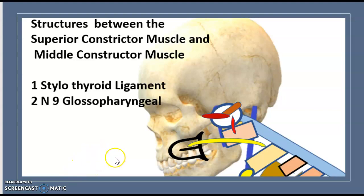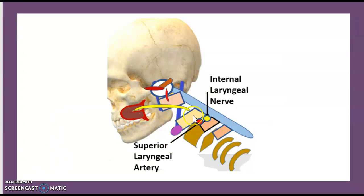A second space is found between the superior constrictor and the middle constrictor. This space is limited by the stylohyoid ligament, and inside the space there is the glossopharyngeal nerve, cranial nerve nine. Between the middle constrictor and the thyrohyoid pharyngeus muscle, there is another space occupied by the internal laryngeal nerve, a branch of the vagus nerve, and the superior laryngeal artery.